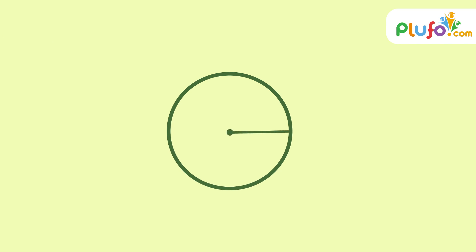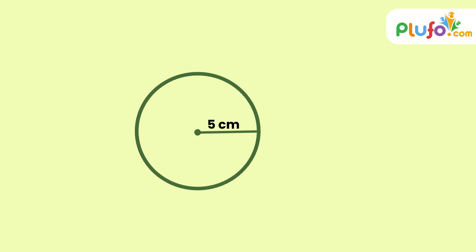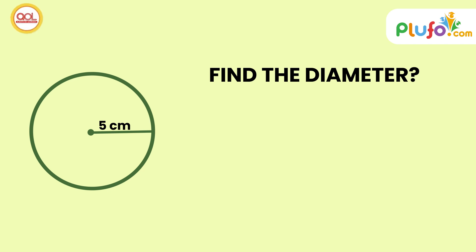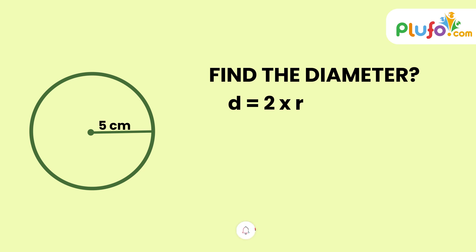Let us try with one example. Here is a circle having radius 5 centimeters. We need to find the diameter. The diameter formula is: diameter equals 2 times R.